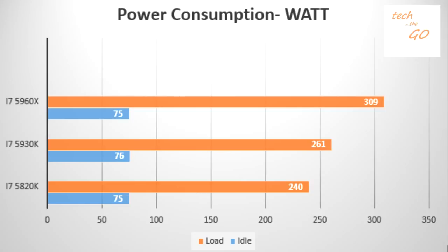The i7-5960X draws 75 watts on idle and 309 watts under full load. The i7-5930K draws 76 watts on idle and 261 watts under load. The i7-5820K draws 75 watts on idle and 240 watts under load.